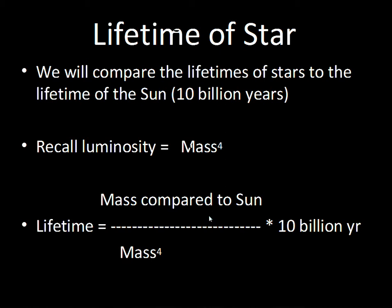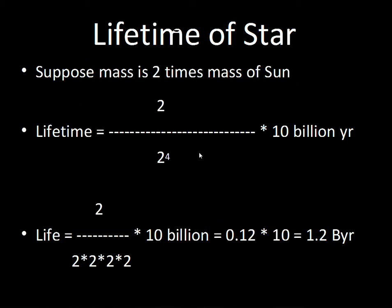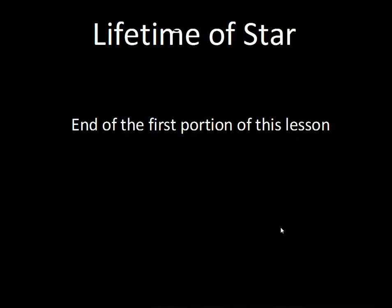For example, suppose we have a star with twice the mass of the Sun. We put 2 in the numerator for fuel, and 2 to the fourth power — which is 16 — in the denominator for the energy output rate. Using a calculator, we find a lifetime of 1.2 billion years. Even though the star has twice as much fuel as the Sun, it burns it at such a high rate that it only lasts 1.2 billion years. That's our first video — keep up with the reading and ask your instructor questions.